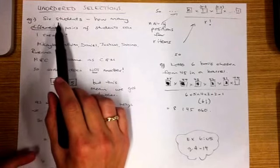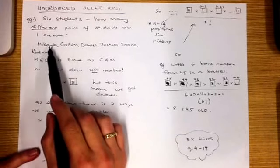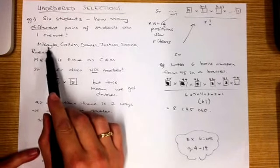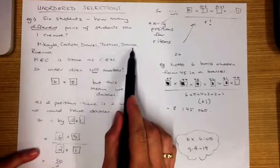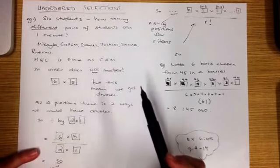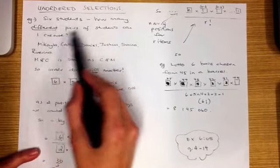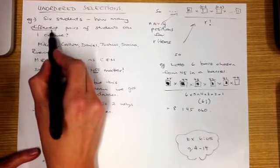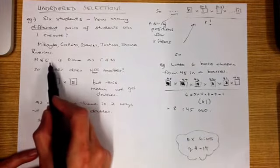If I have 6 students — the same 6 students as we had in the last example: Michaela, Callum, Daniel, Joshua, Shana and Riverina — I want to know how many different pairs of students I can create.